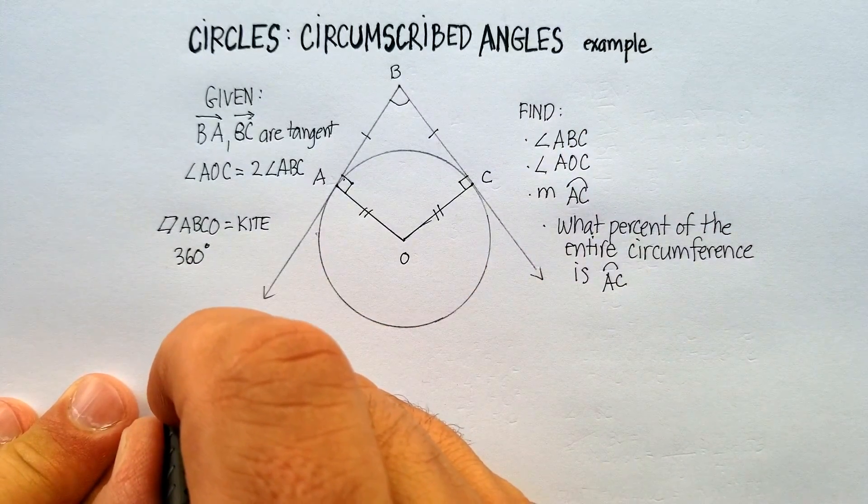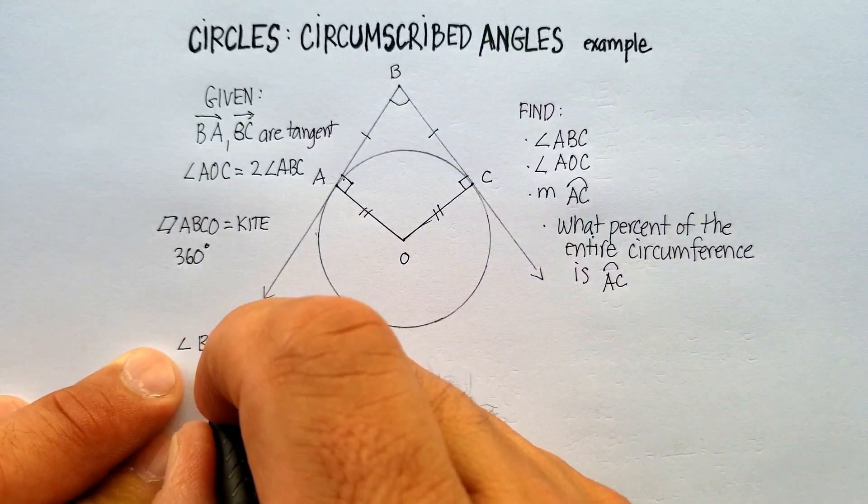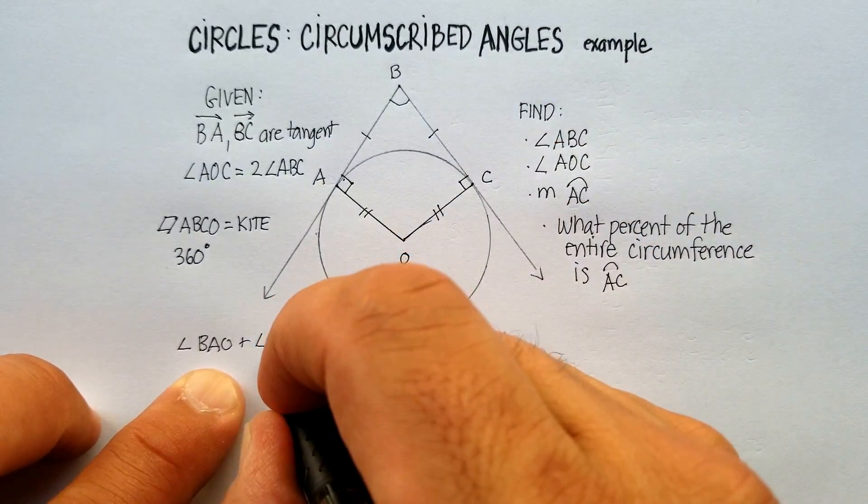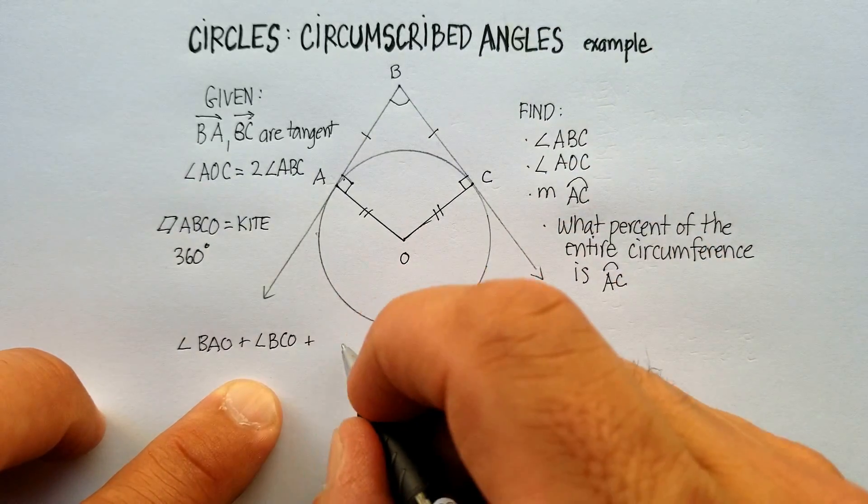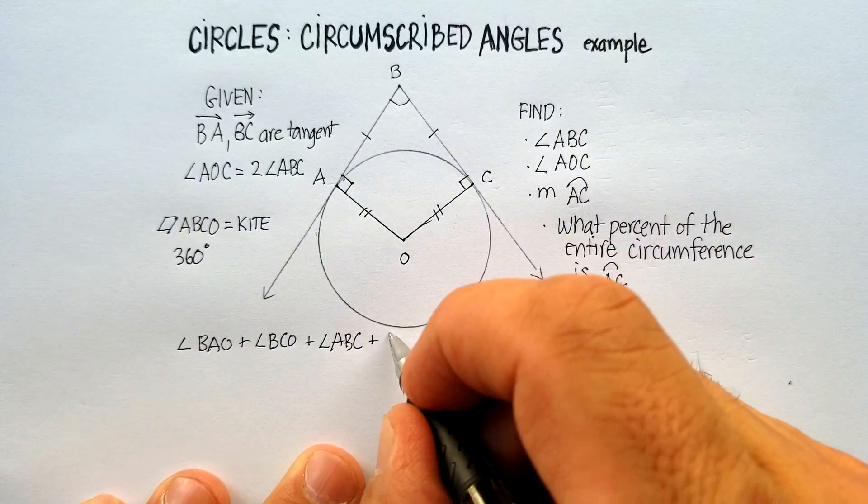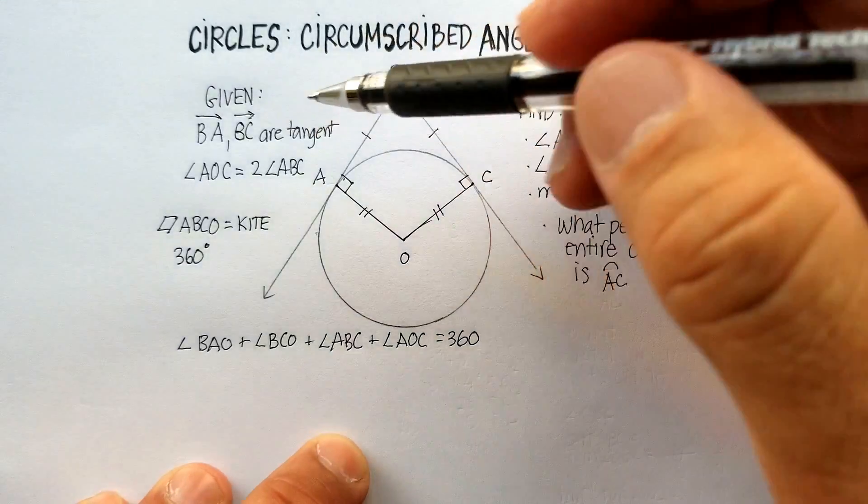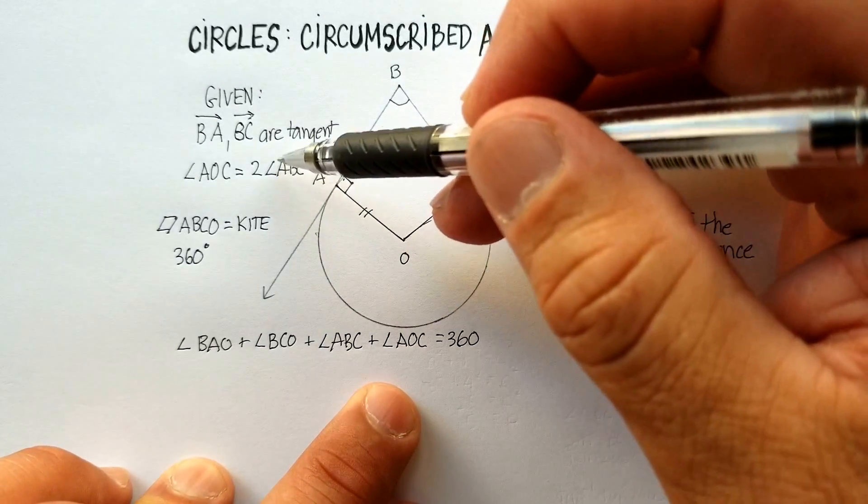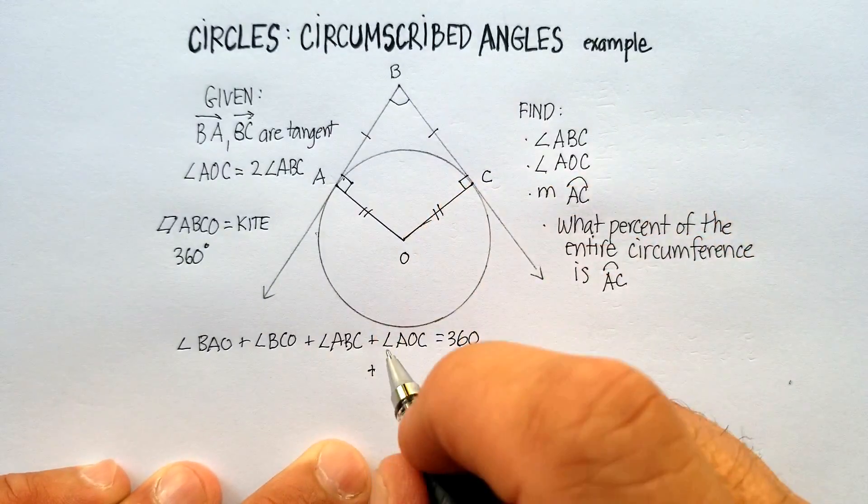We know angle BAO plus angle BCO plus angle ABC plus angle AOC equals 360 degrees, don't we? We also know that we can replace angle AOC with two ABCs. So, let's go down here and replace this with two ABCs.